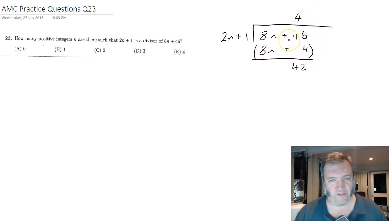So this would go into it four times plus 42 divided by 2n plus 1. Remember when you do division, what's your remainder? It's really you write it over the divisor. Excellent.